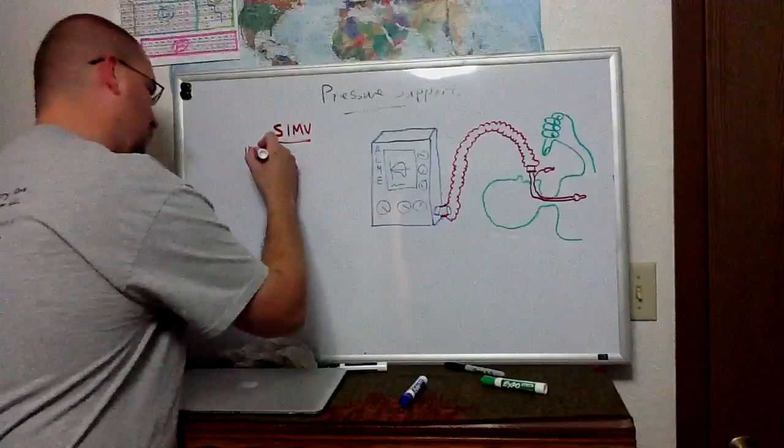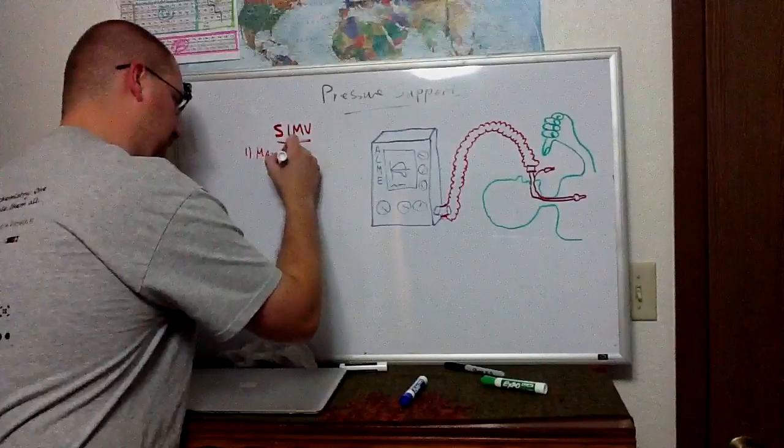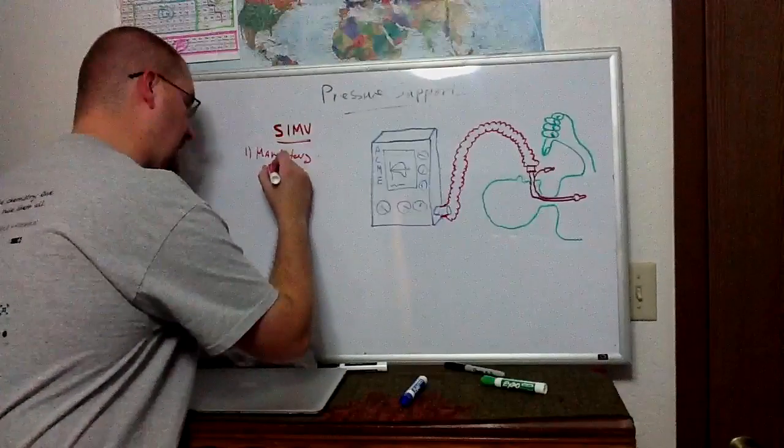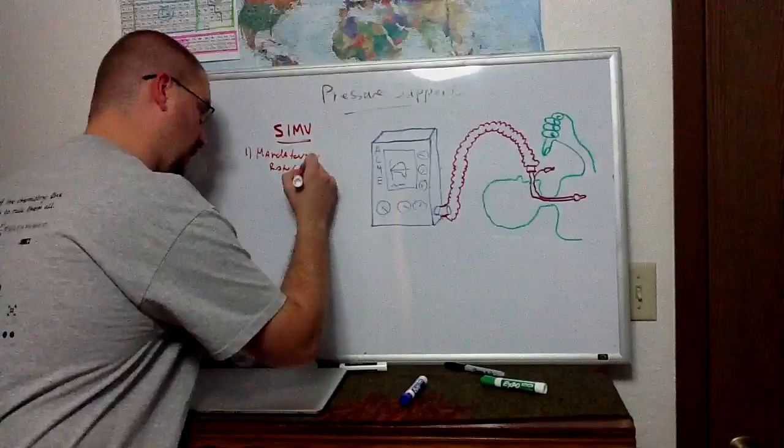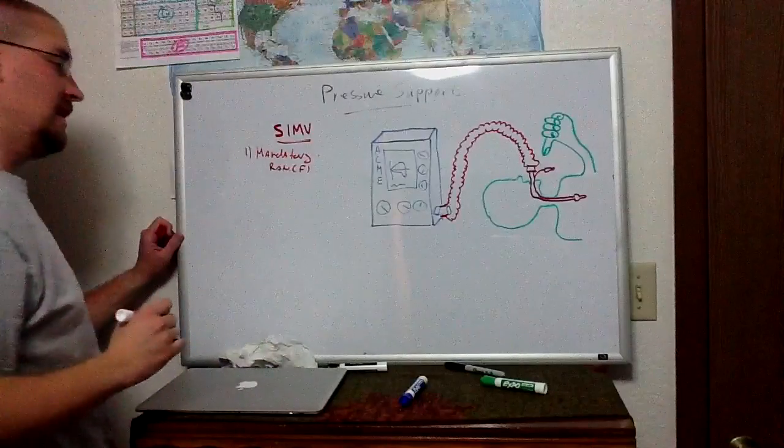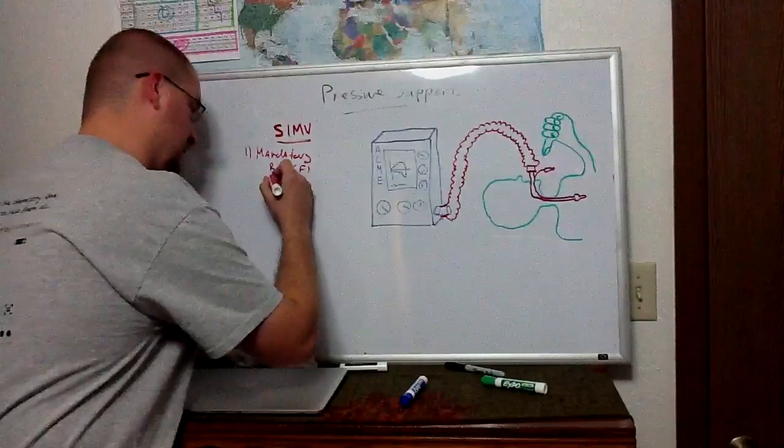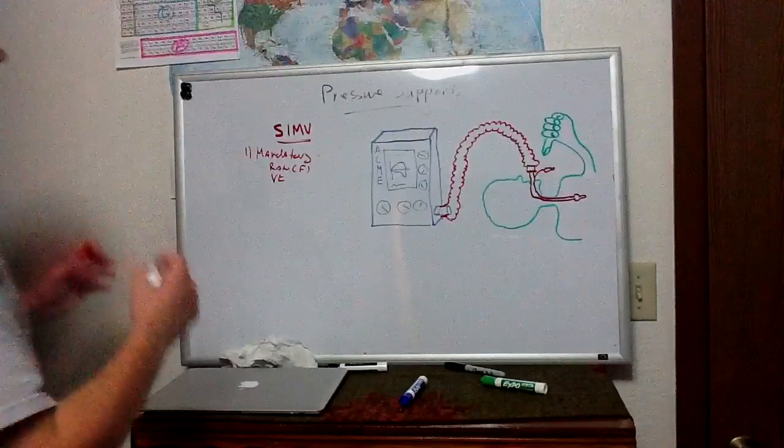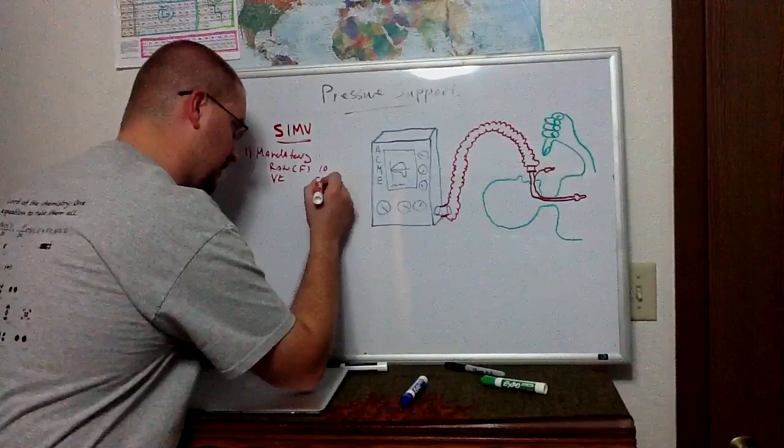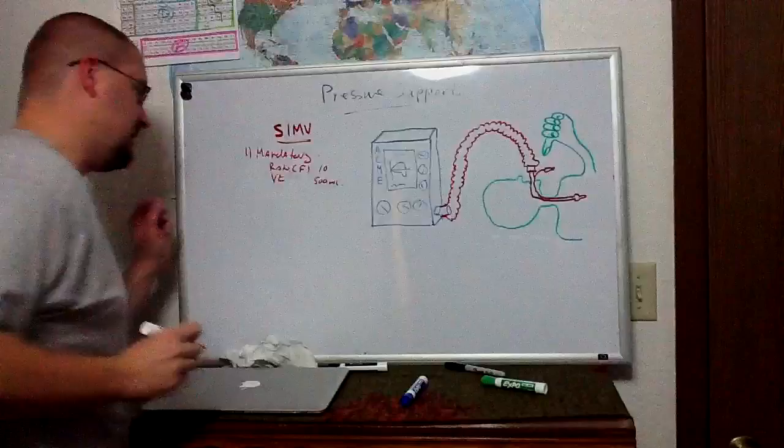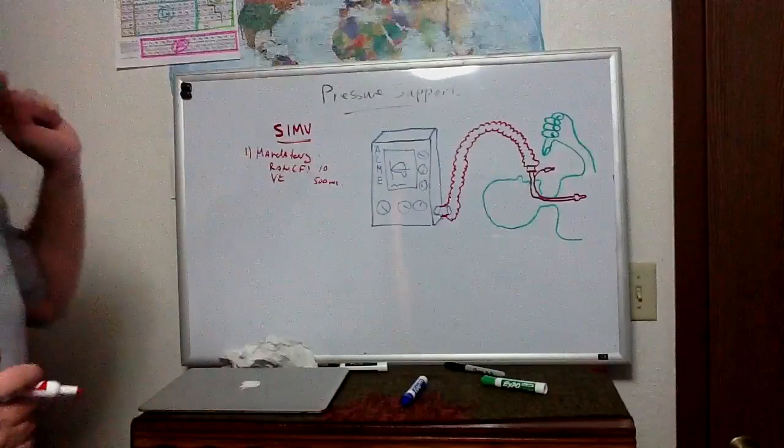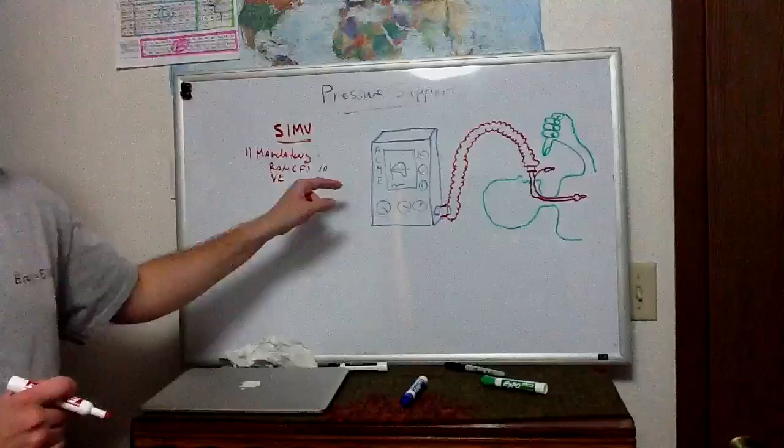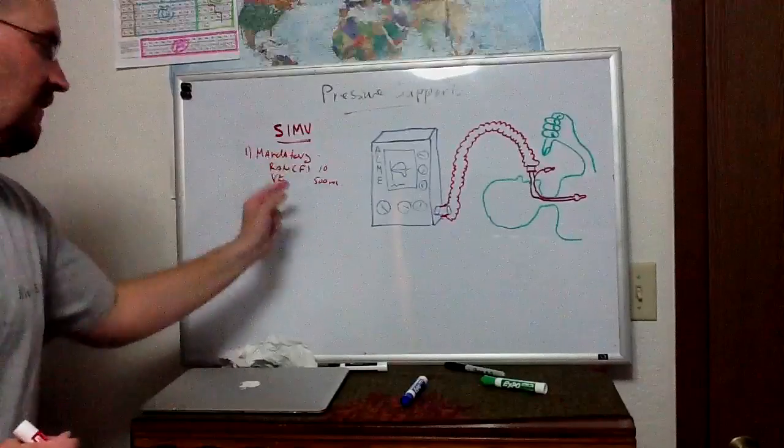I have the first component, which is mandatory. And this, in volume control ventilation, generally means I set a rate, a respiratory rate, and I set a tidal volume. And that ventilator, let's go ahead and throw in some numbers, 10 and 500 mils. So what that means is that ventilator is going to give that patient 10 breaths a minute, 500 milliliters of breath.